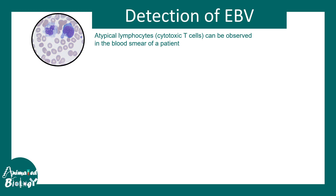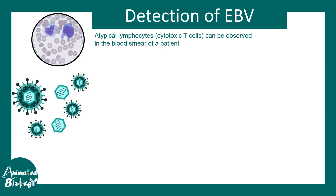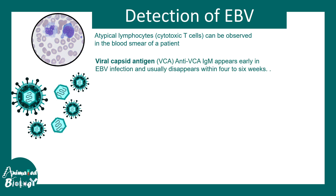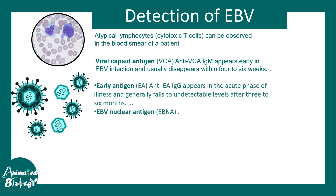EBV can be detected via a peripheral blood smear, which shows atypical lymphocytes — mostly cytotoxic T cells — which is characteristic of EBV infection. Additionally, viral proteins and particles can be detected: viral capsid antigen can be detected within six weeks but disappears after that time point.